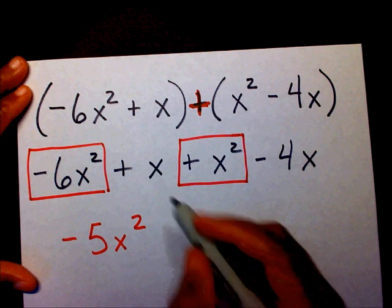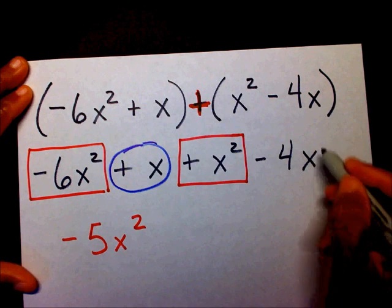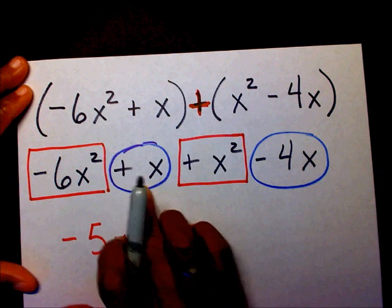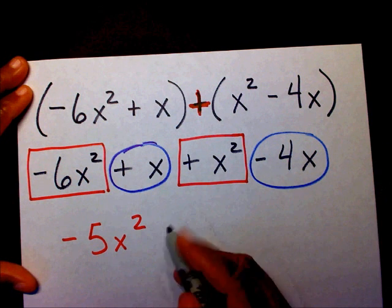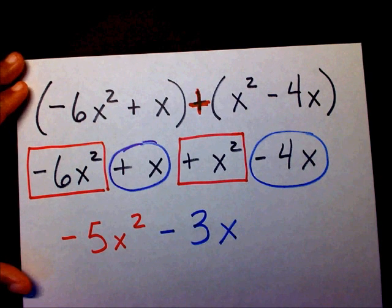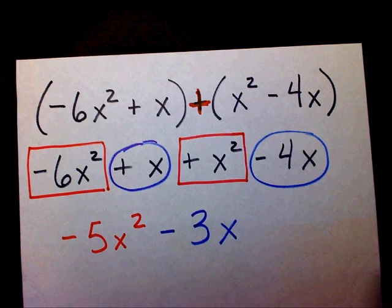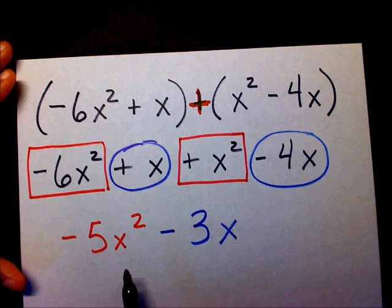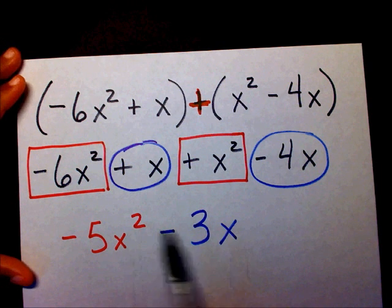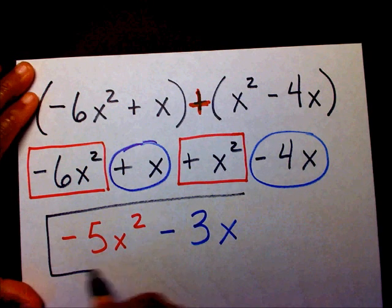I have a plus x and a minus 4x, so plus x minus 4x is negative 3x. Now that I've combined my like terms, I want to make sure my exponents are in descending order, also known as standard form. So my final answer is negative 5x squared minus 3x.